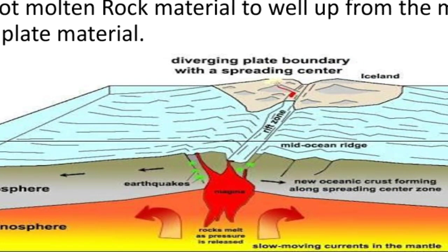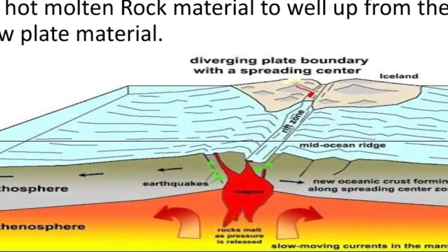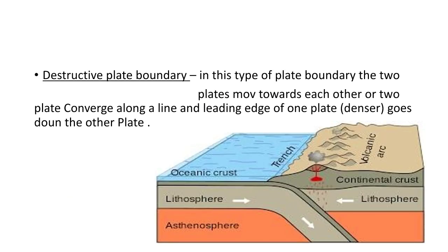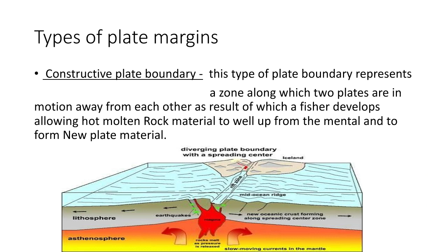Which is also known as rift zone, and from lower asthenosphere, which is shown by red color, magma coming towards the rift zone and forming new crust. Second margin is destructive plate boundary or convergent plate boundary.